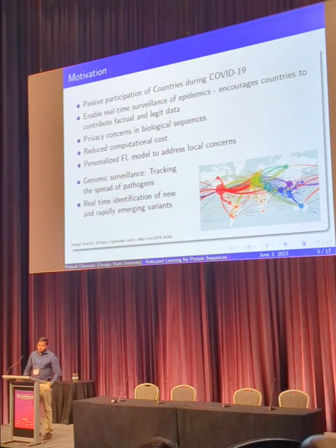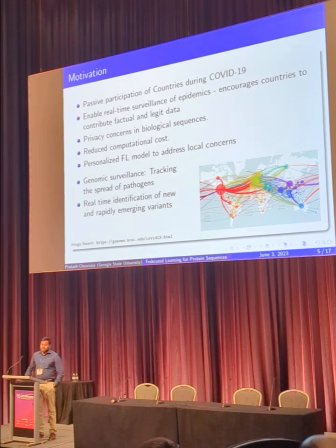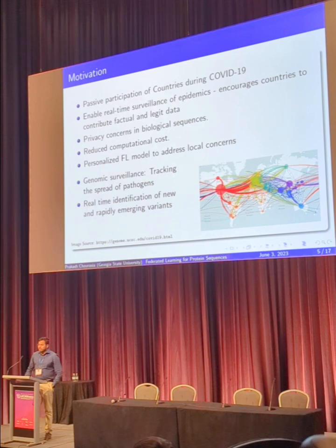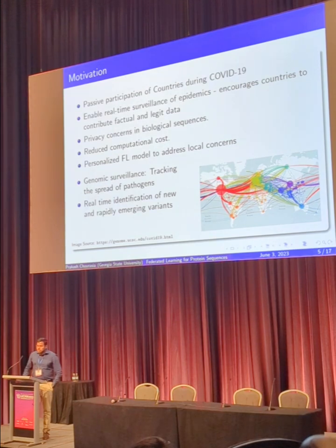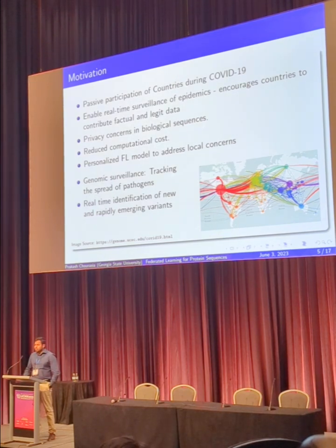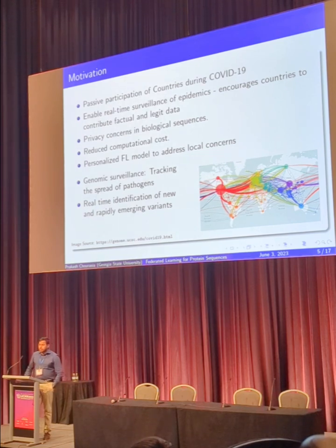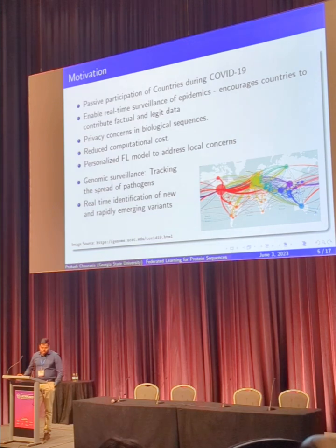The passive participation of countries during COVID-19 was the main motivation behind this work. Whenever new variants and new waves were coming, countries were not very encouraged to share their data. For example, when the South African variant arrived, instead of getting rewarded, countries were penalized by the whole world for revealing their information. There is no motivation for governments, healthcare systems, and countries to reveal their legitimate data. So we wanted to come up with a solution that provides a way for countries to contribute towards training a machine learning model to identify and classify new lineages, addressing these privacy concerns.